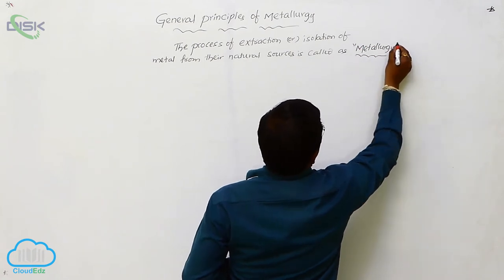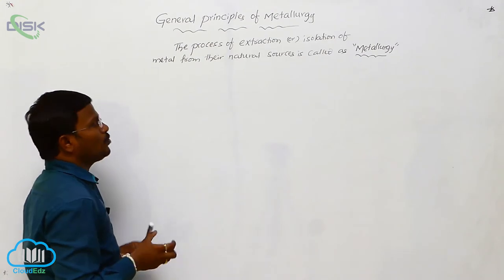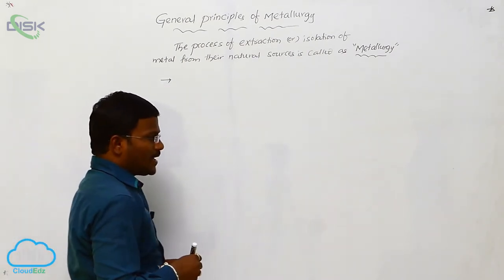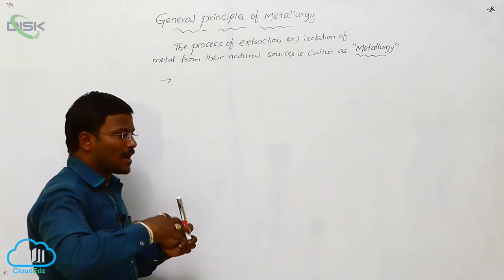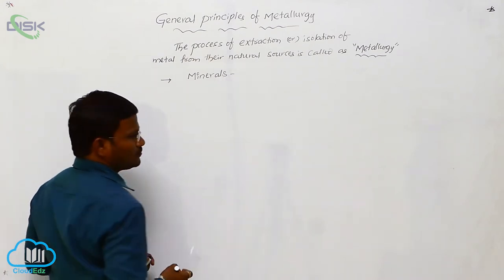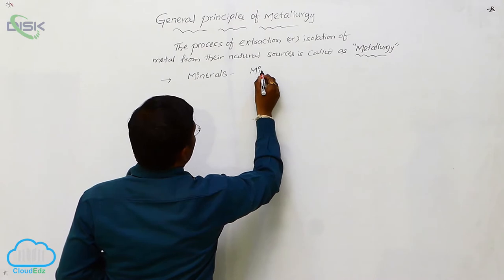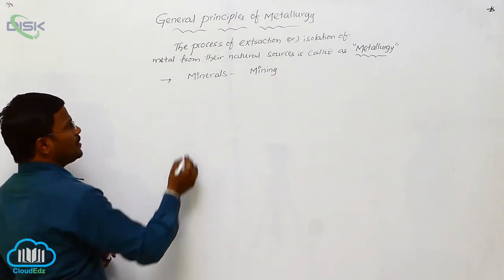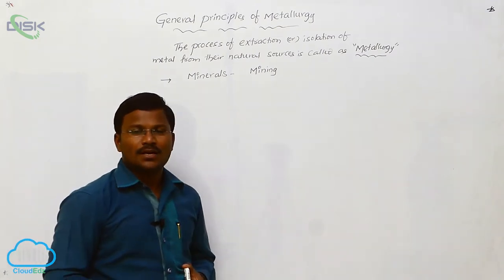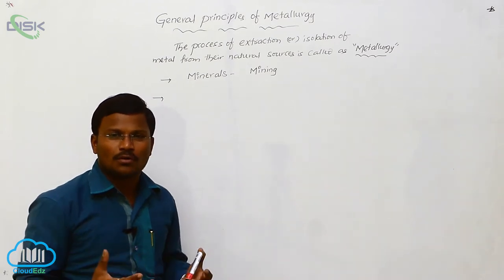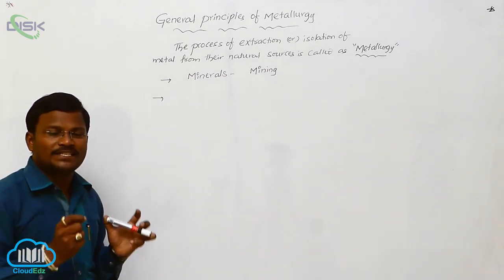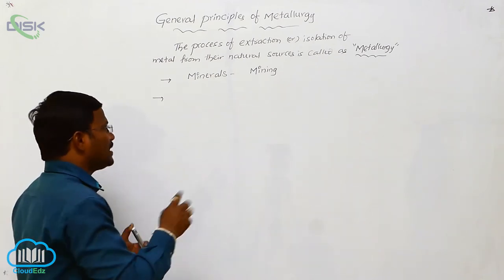The concept of isolation or extraction of pure metal from their natural sources is called metallurgy. Generally, these metals may be available in the Earth's crust combined with other elements. Those natural chemical resources or natural sources are called minerals. These minerals are available and obtainable by mining. Those minerals in which the desired element or metal quantity is more and which are commercially and chemically feasible to separate metals are called ores.